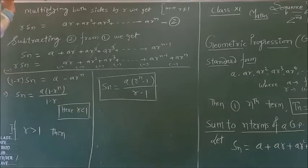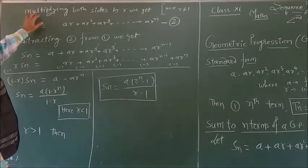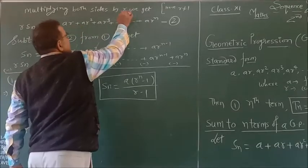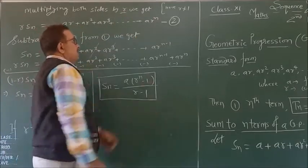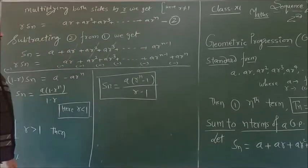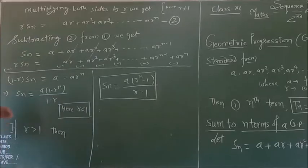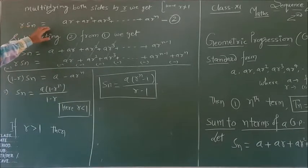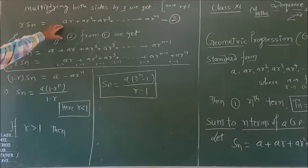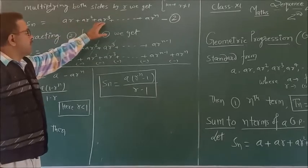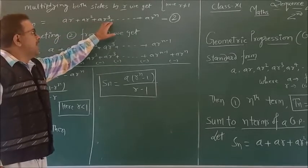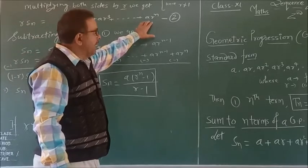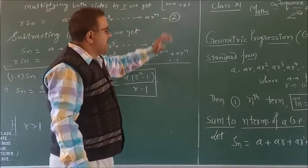Multiplying both sides by the common ratio r (where r ≠ 1), we get: r·S_n = ar + ar² + ar³ + ... + ar^n. This is the second equation.